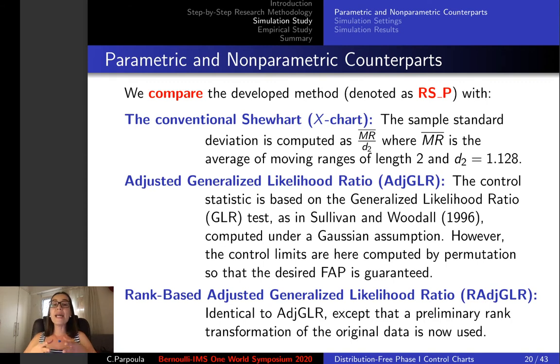A chart which is based on the generalized likelihood ratio of Sullivan and Woodall but the control limits are computed by permutation, which means the resulting adjusted GLR test-based chart is actually distribution-free.